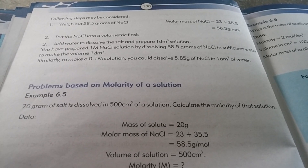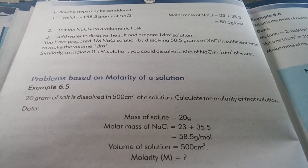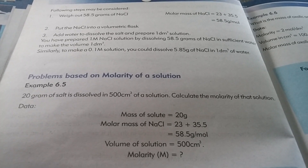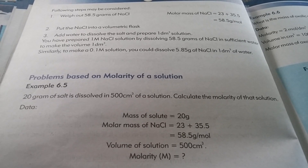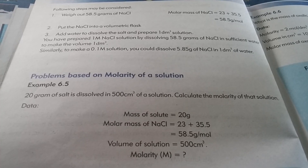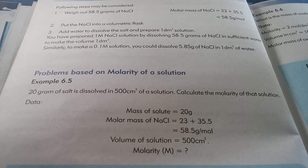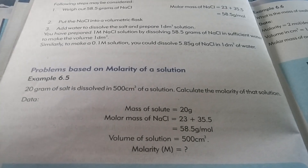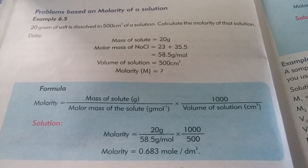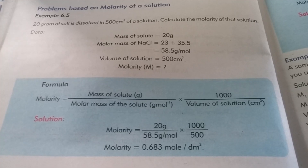We get a total of 58.5 grams per mole. Now, we weigh 58.5 grams of sodium chloride, put it in a volumetric flask, add some water to dissolve the salt, and prepare one dm³ of solution. Now we solve a numerical on molarity.